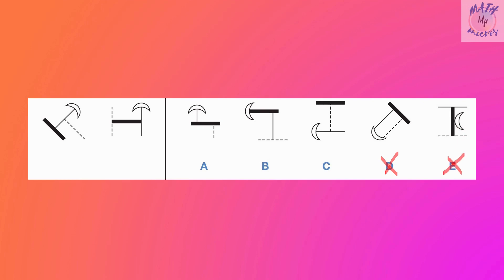Now we have three options left: A, B, and C. The same size should also be considered. When I look at option A, the dotted line is very small, so we can rule out option A. Now we have only B and C left. In option B, the crescent should have a thin solid line, but instead it has a big black line in the middle, which means this can also be ruled out.